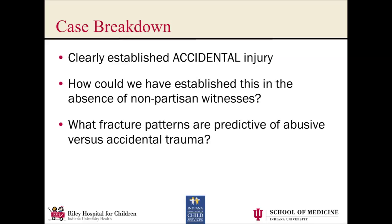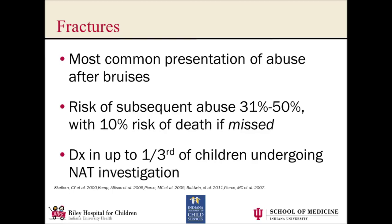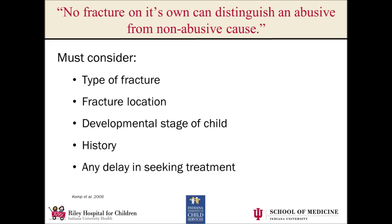When we start talking about patterns in abuse in children, after bruises, we need to be comfortable with fractures. Fractures are the second most common indication of ongoing abusive injury, and the risk of subsequent abuse and mortality is quite high. Unfortunately, no fracture on its own can distinguish an abusive from a non-abusive cause. We need to consider things like the type of fracture — is it spiral, transverse, or comminuted? — where the fracture is, the developmental stage of the child, the history that's offered, and whether there's been any delay in seeking care.